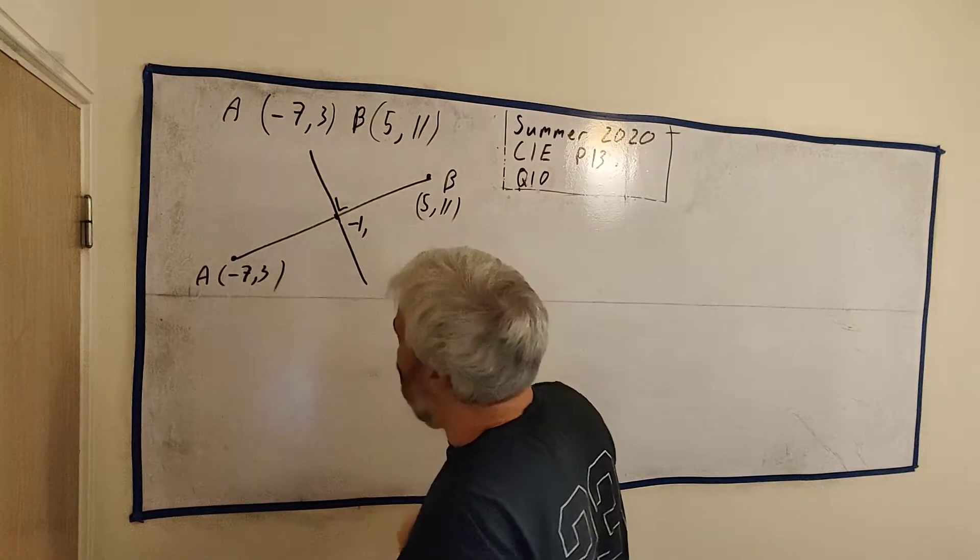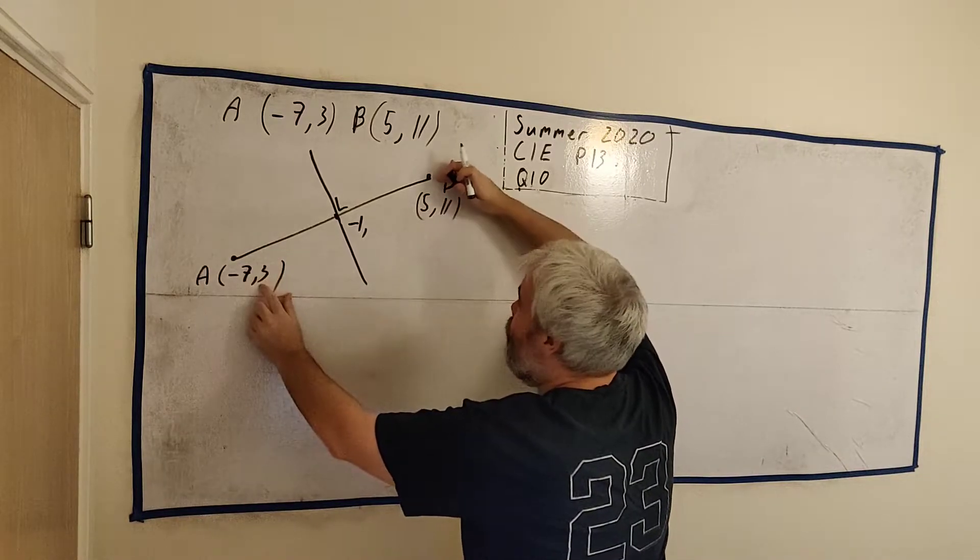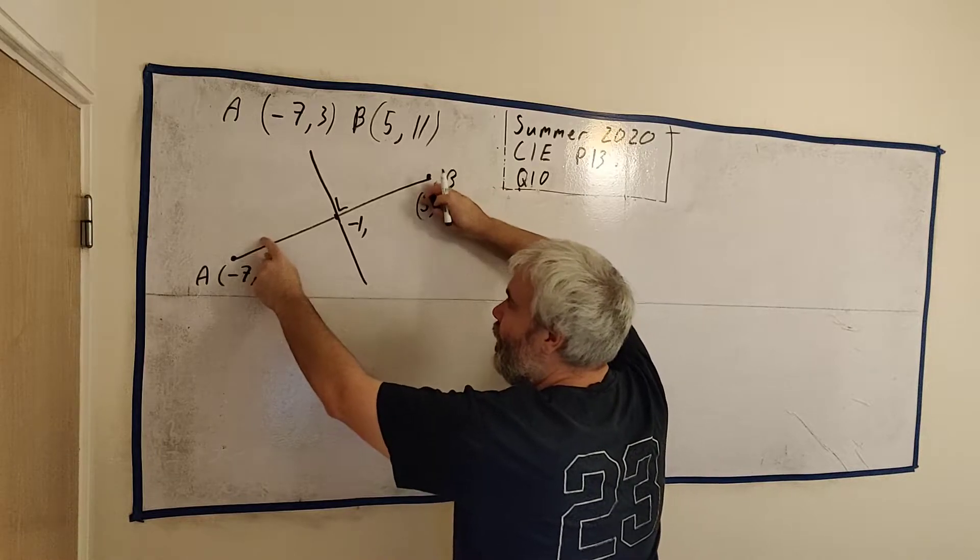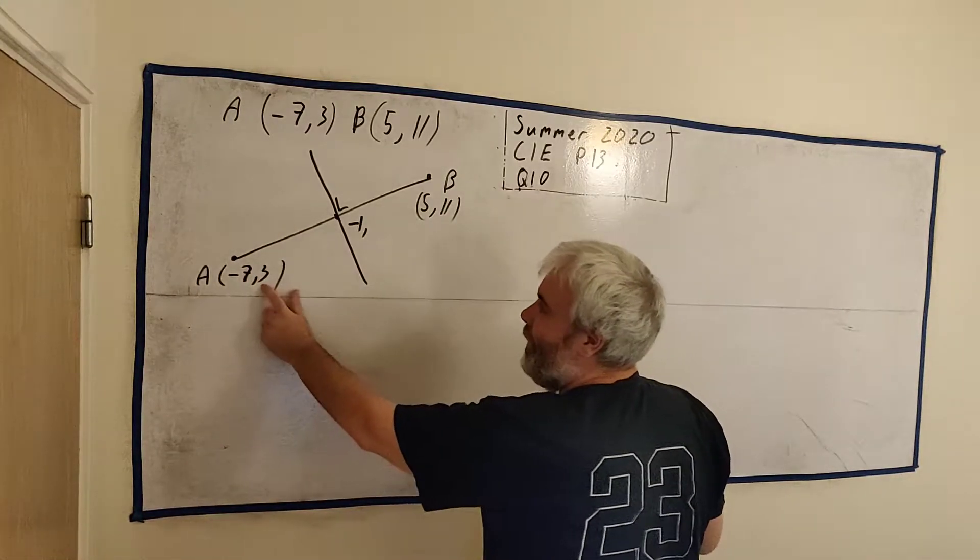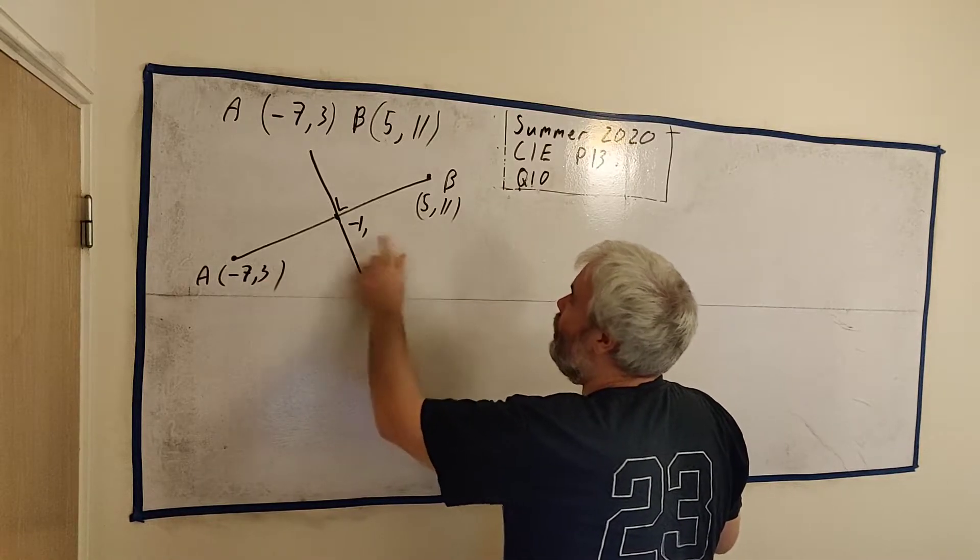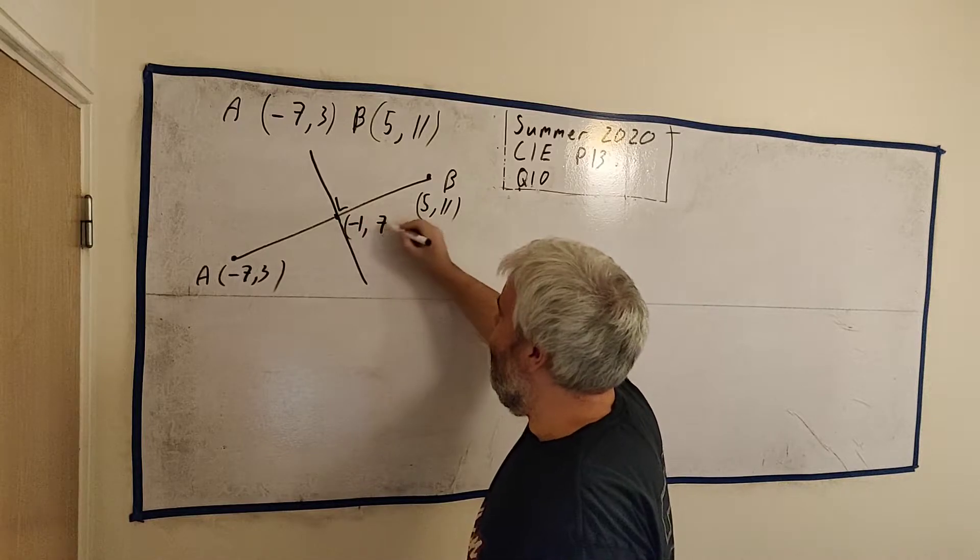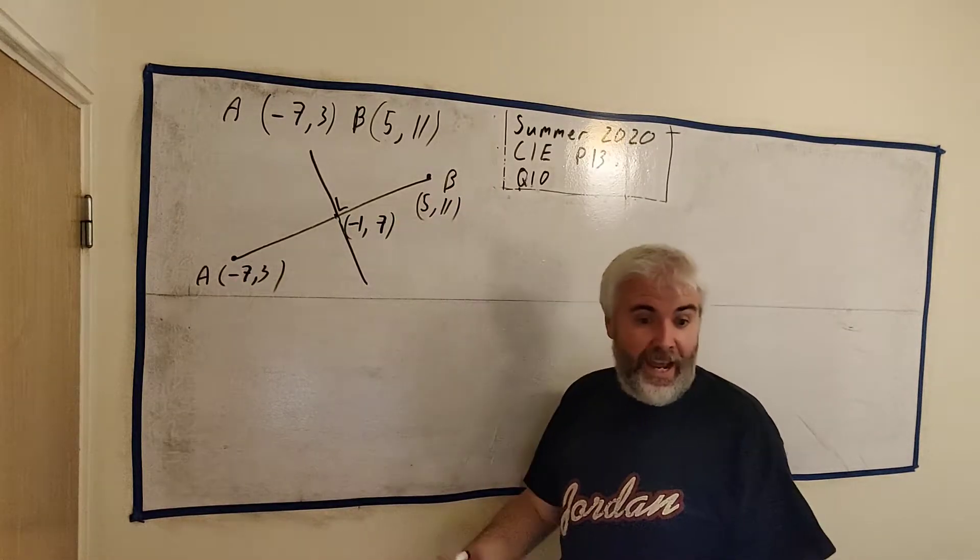So if we add these two numbers together, we get minus 2. Minus 2 divided by 2 is minus 1. Again, the middle point between the two y's. This is 3, this is 11. Easier way to do that is add them together. We get 3 plus 11 is 14. Half of 14 is 7. That is the middle point between these two points. That's half our job done.